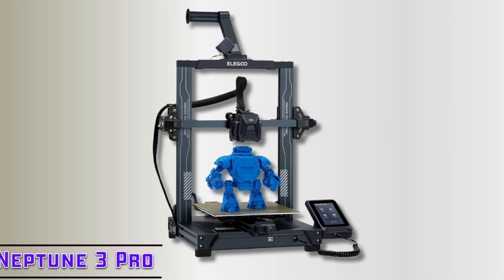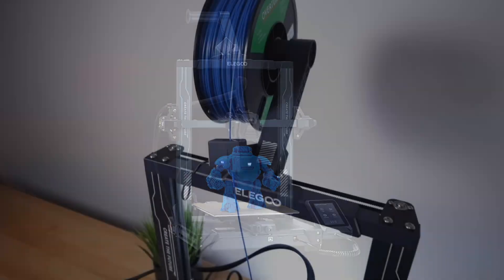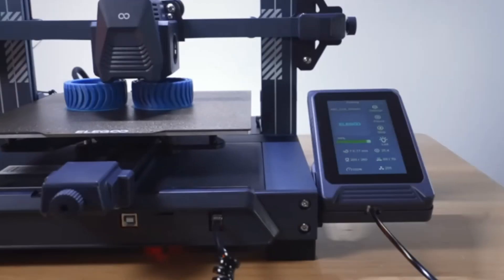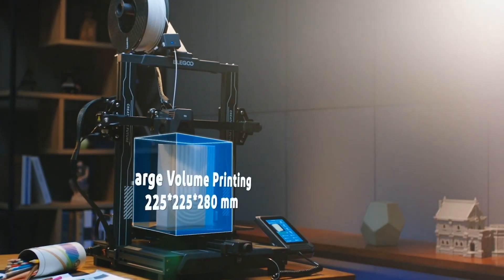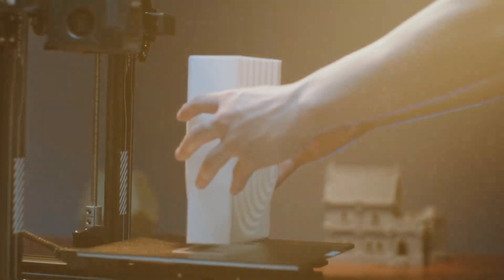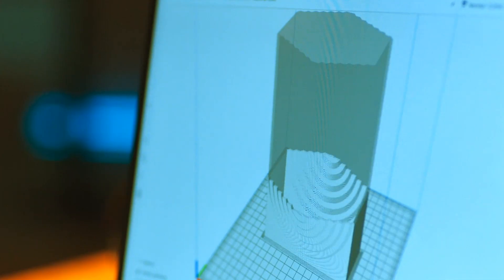Starting our list is the Neptune 3 Pro by Elegoo. This user-friendly printer offers upgraded features like a direct drive and dual Z-axis without an upgraded price. With a print size of 225 x 225 x 280mm, it meets the needs of most users.